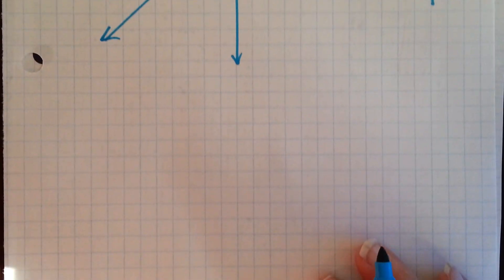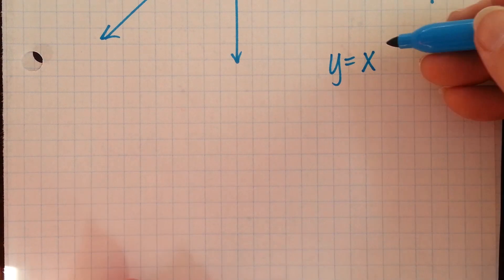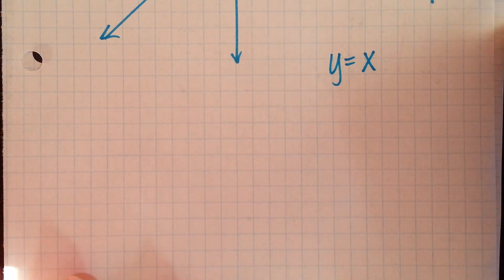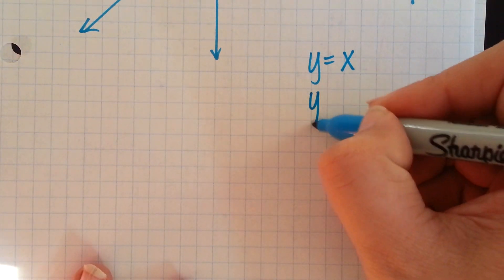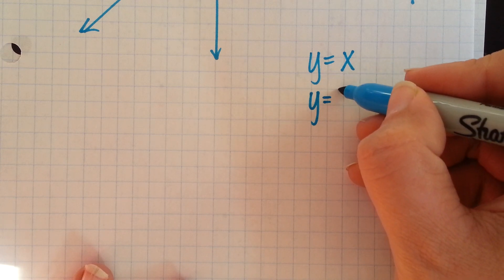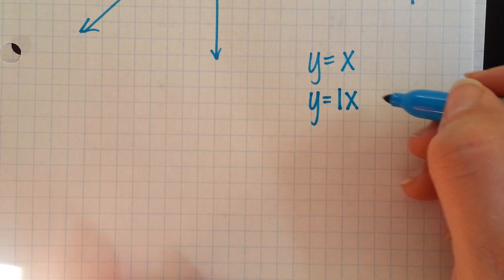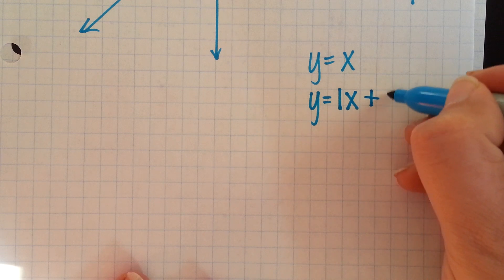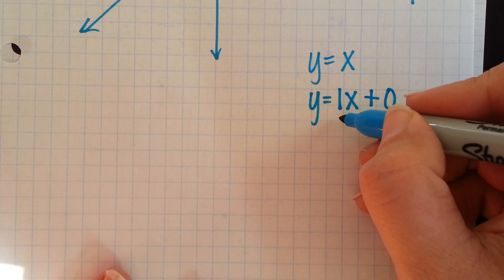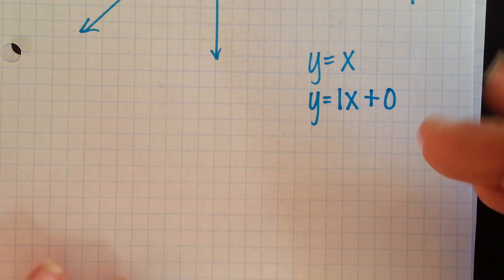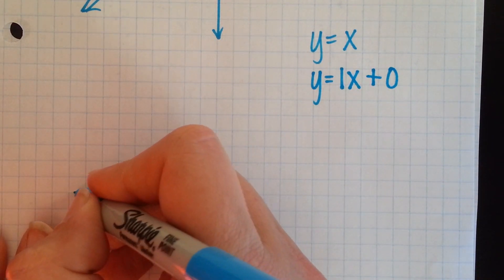The other way is to use our knowledge about lines. This function happens to be in slope-intercept form. You might not recognize the slope right away, but it's hidden in front of the x — remember, that's always a 1x. And at the end, our y-intercept, since there's nothing else there, we could put plus 0. So this has a slope of 1 and a y-intercept of 0.